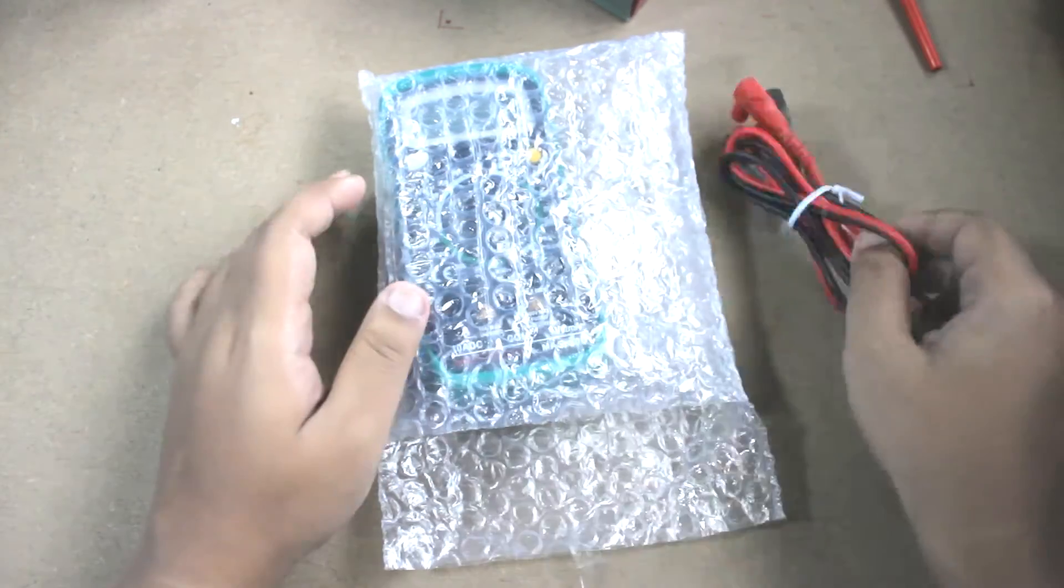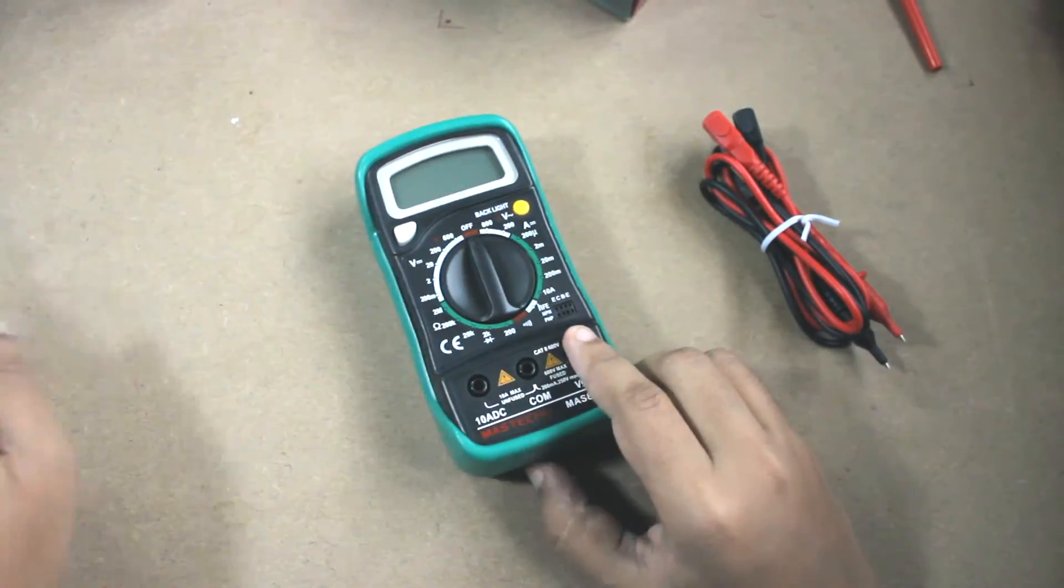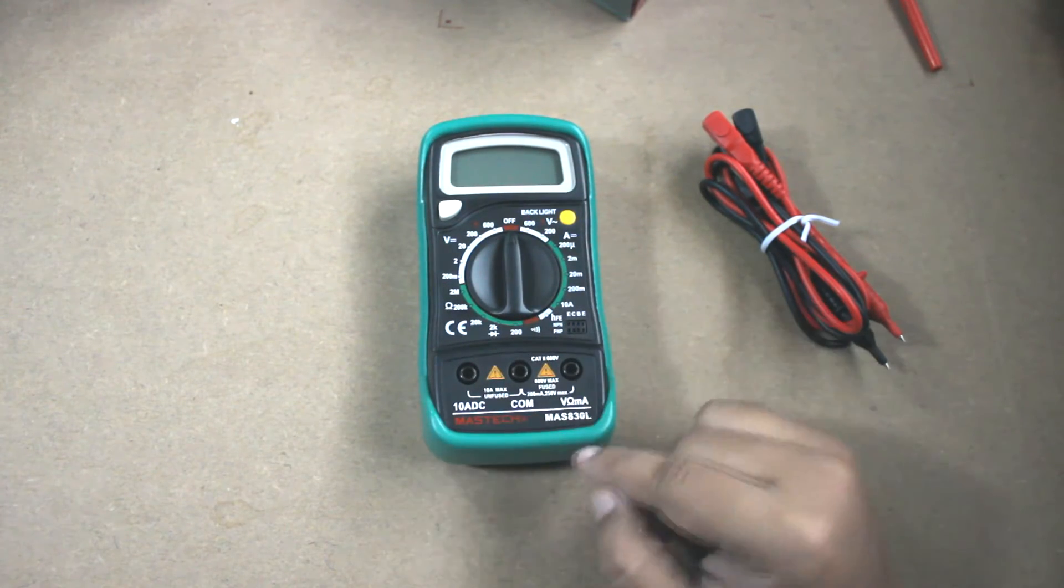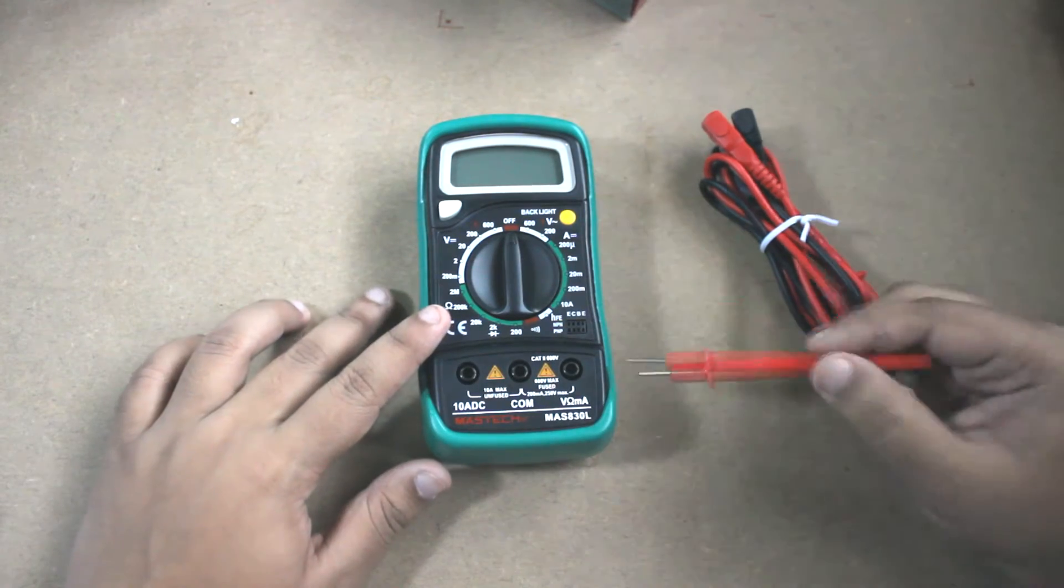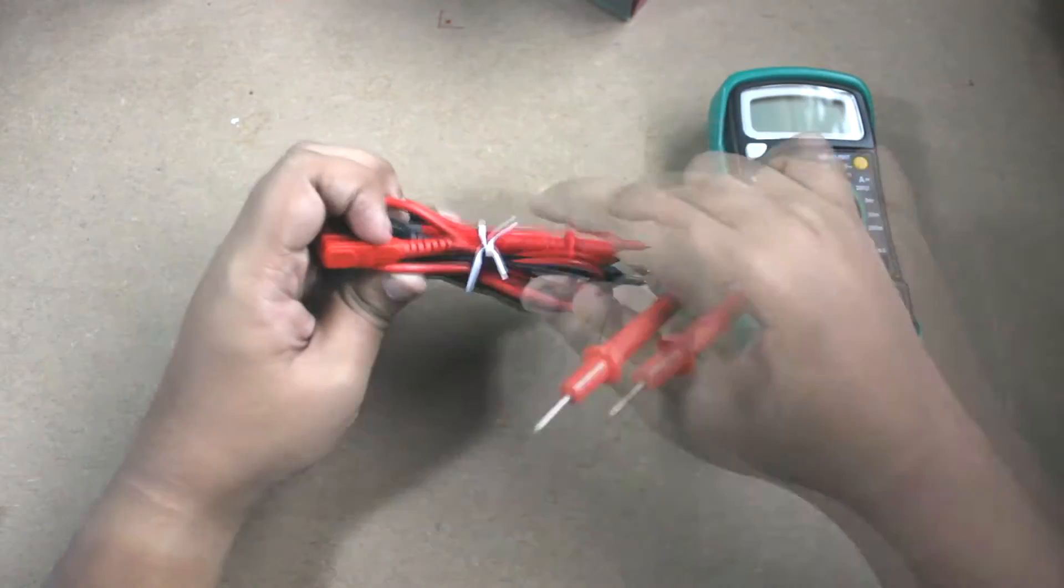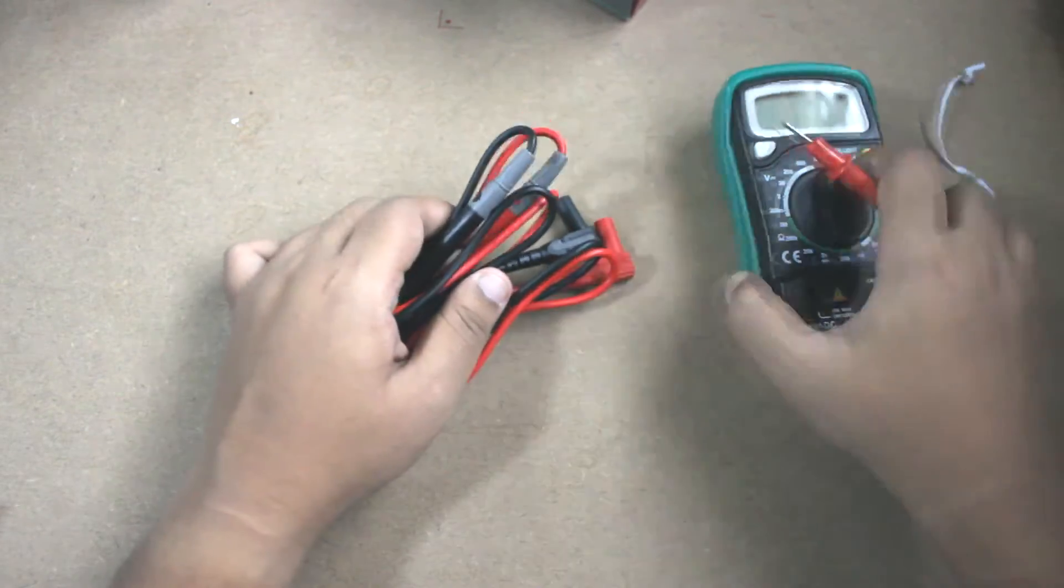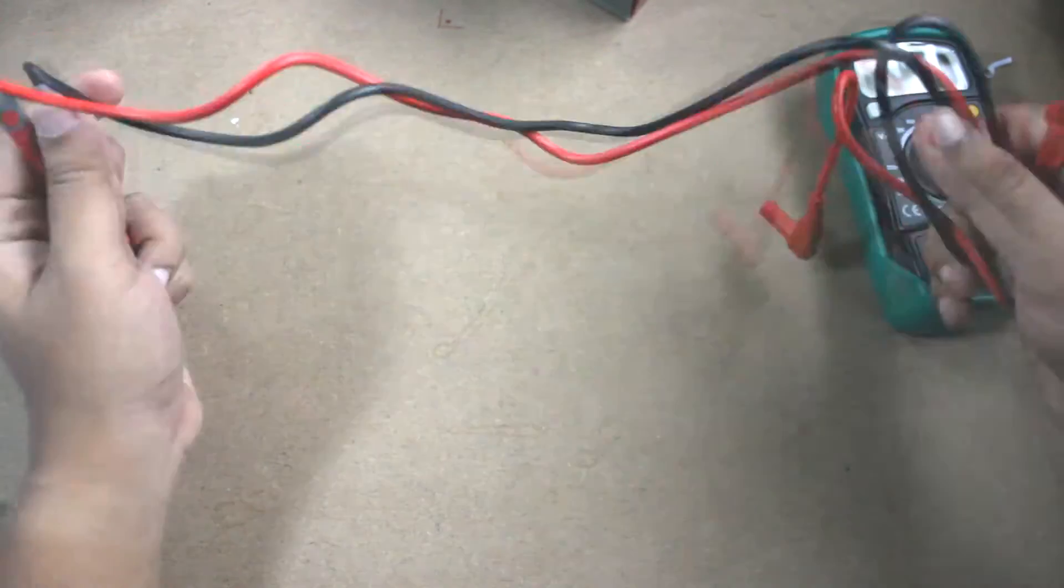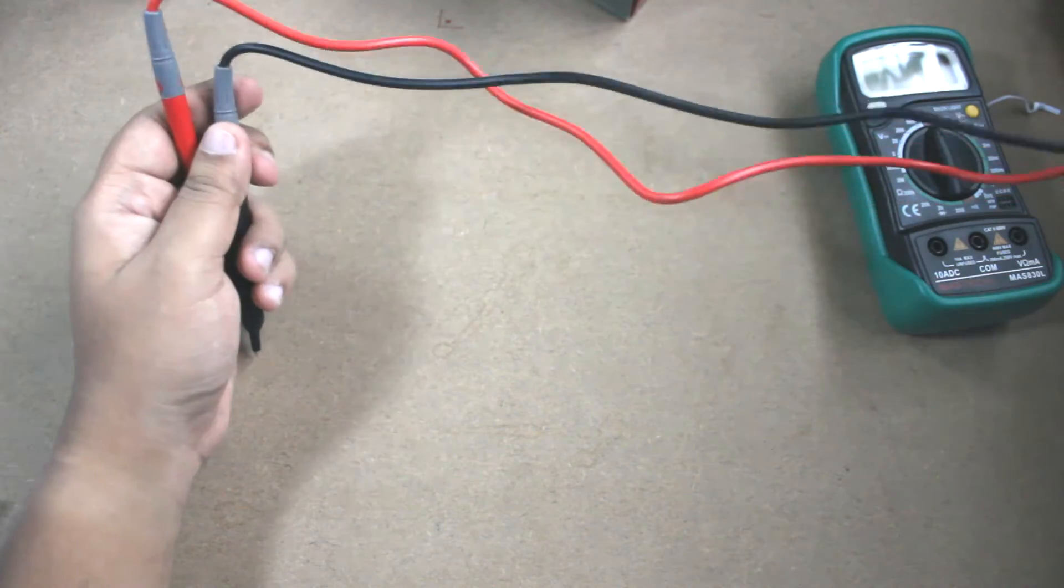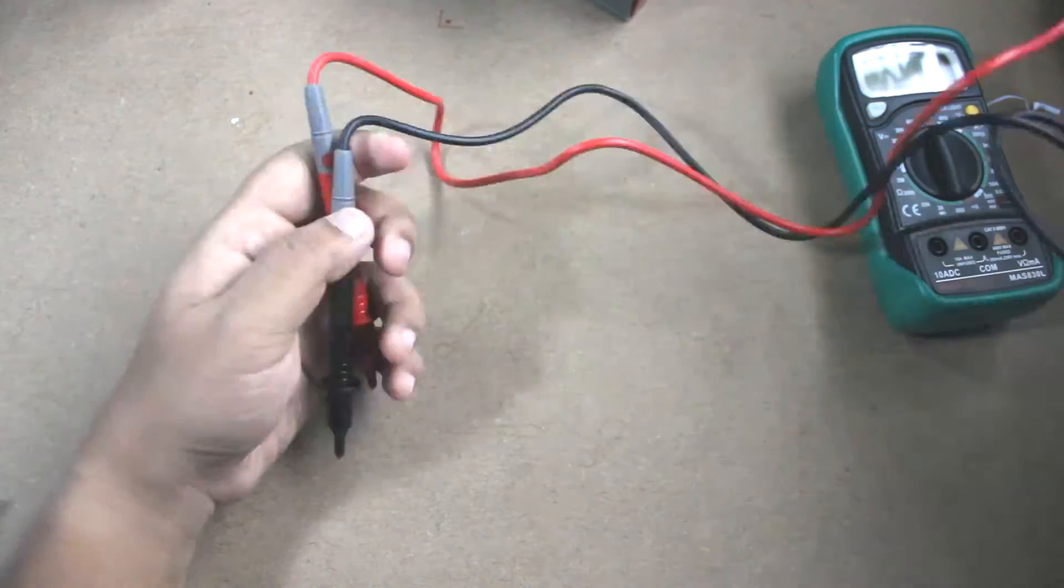These are the probes, this is the main unit. This is the multimeter, Mastek MAS 830L. These are the probes. Let's look first at the probes. It looks like the probe will be one meter. Yes, the probe is one meter, good quality probe.